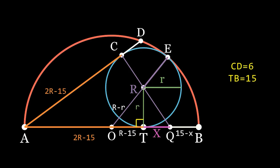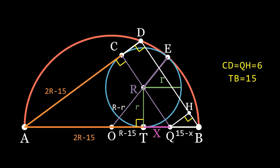What else we can notice is that angle ADB is 90 degrees, because it rests on the diameter. Also from point Q, I drop a perpendicular to DB, such that segment QH is equal to CD and equals 6.